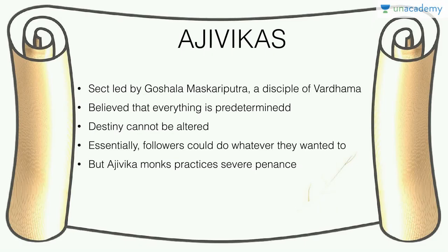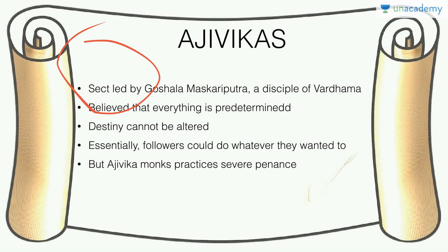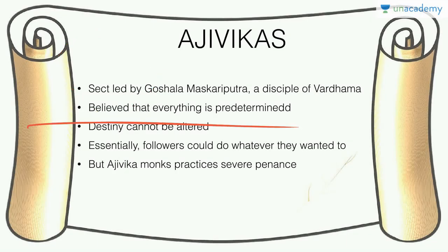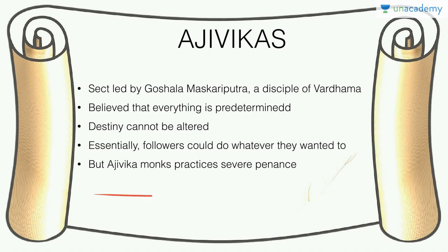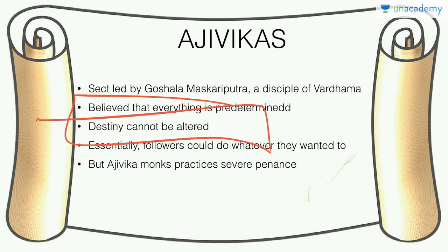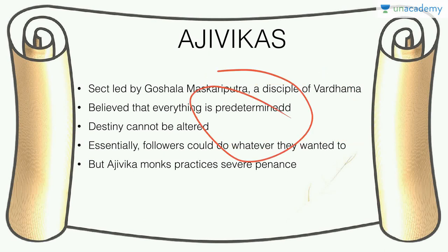Lastly, the Ajivikas were a sect led by Goshala Maskariputra, who was a disciple of Mahavir himself. He believed that everything is predetermined — so essentially do whatever you want. Yet paradoxically, the Ajivika monks practiced severe penance, saying it was by choice even while believing destiny cannot be altered. We'll talk a little more about ancient India and then move on to medieval. Please rate, review, and recommend.